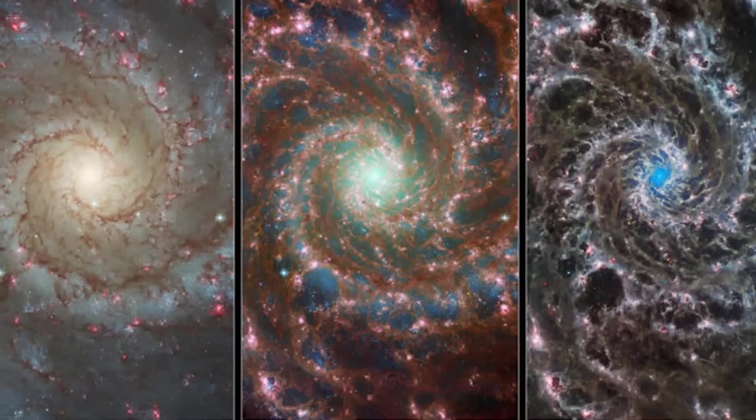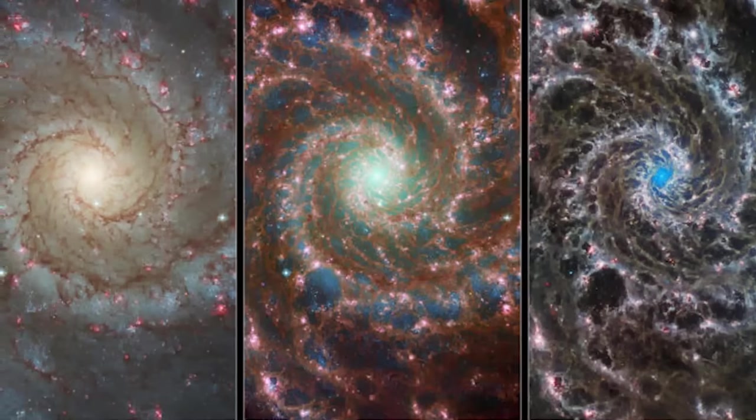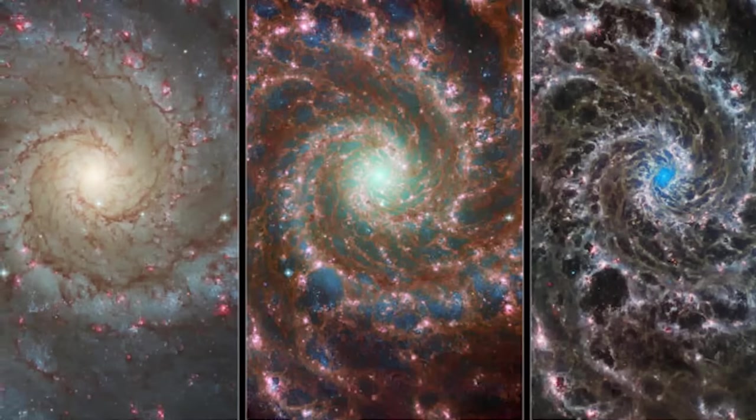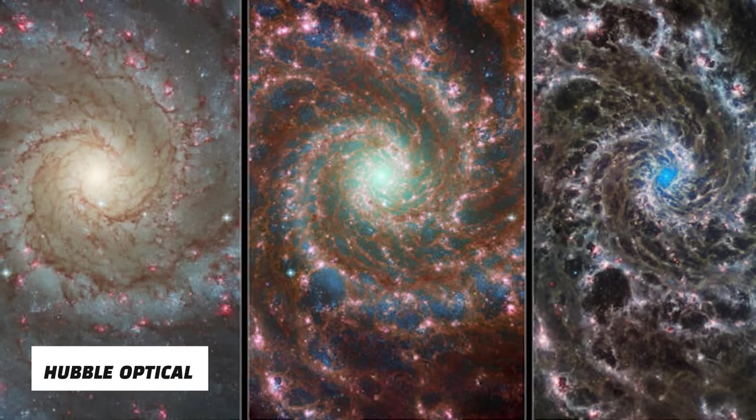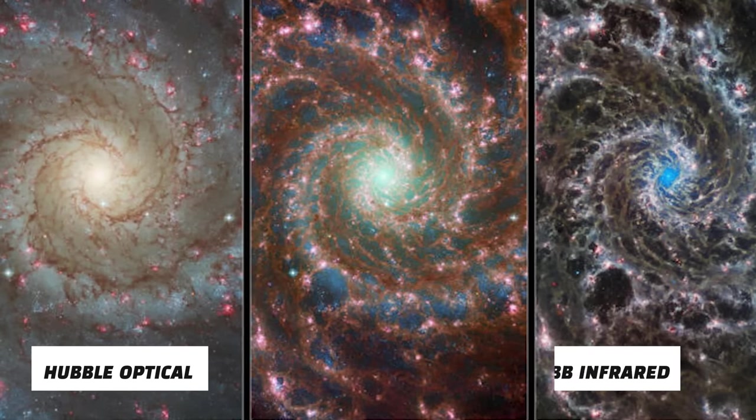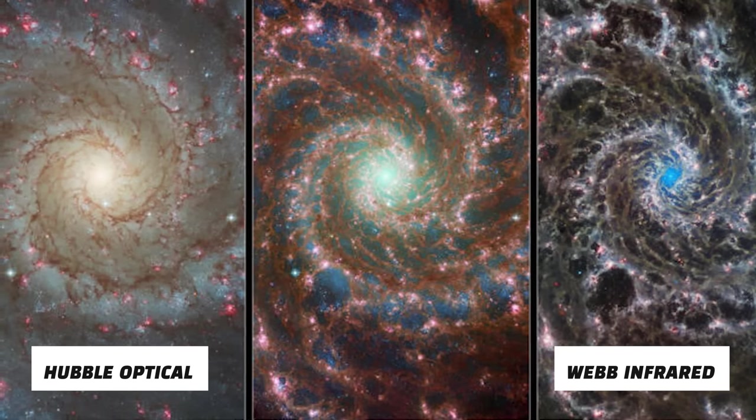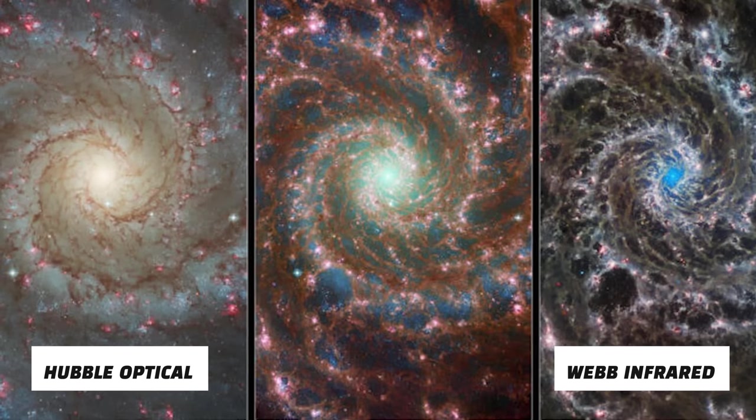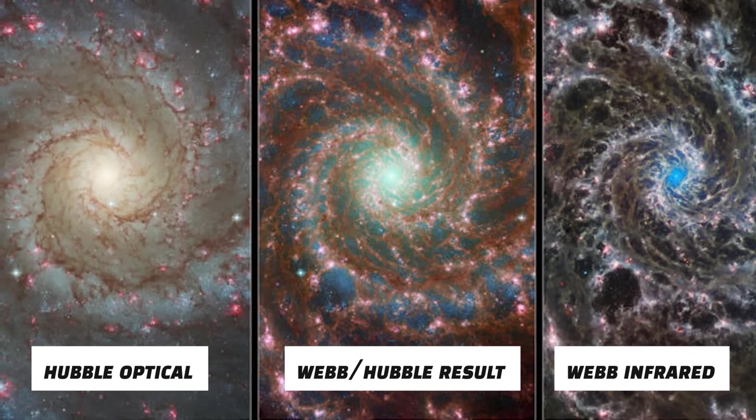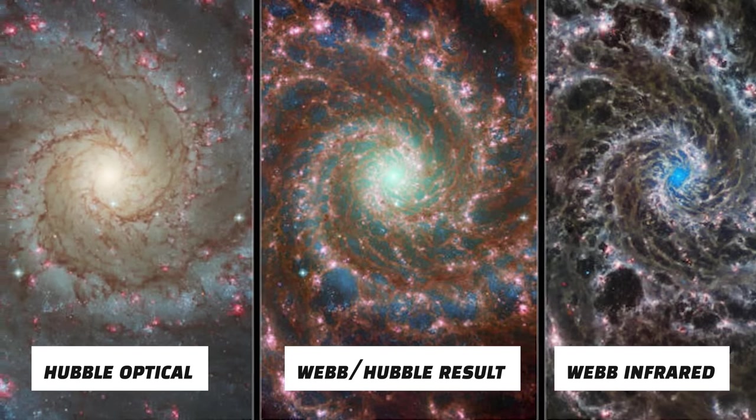A side-by-side comparison illustrating how several space observatories might collaborate. Here, a Hubble image, left, a Webb image, right, and a composite image containing data from both observatories, middle, depict the spectacular M74 galaxy.